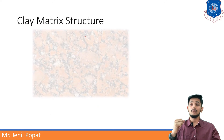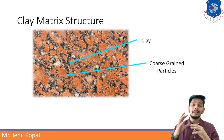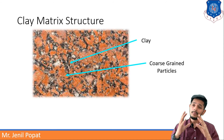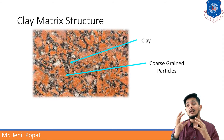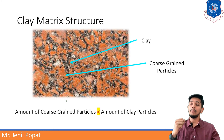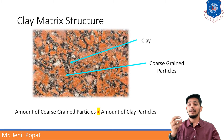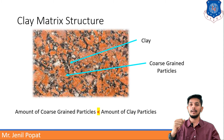Moving forward to clay matrix structure. In the clay matrix structure it is the inverse of coarse grained structure. In clay matrix, there are more clay particles and lesser coarse grained particles. You can see the amount of coarse grained particles is lesser than the amount of clay particles. These are the different types of soil structures.